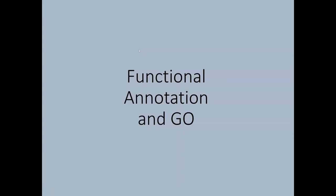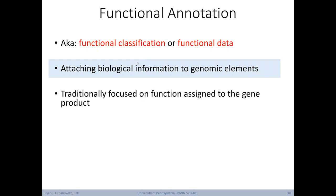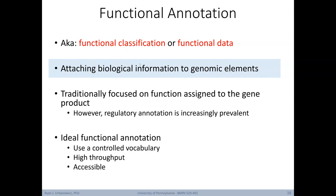Now let's revisit the idea of functional annotation using GO. First off, let's define functional annotation. Functional annotation can also be referred to as functional classification or functional data. The idea here is to attach biological information to genomic elements. It's traditionally focused on function assigned to the gene product. However, regulatory annotation is becoming increasingly prevalent. An ideal functional annotation uses a controlled vocabulary, is high throughput so that you can annotate lots of variables quickly, and it's accessible.